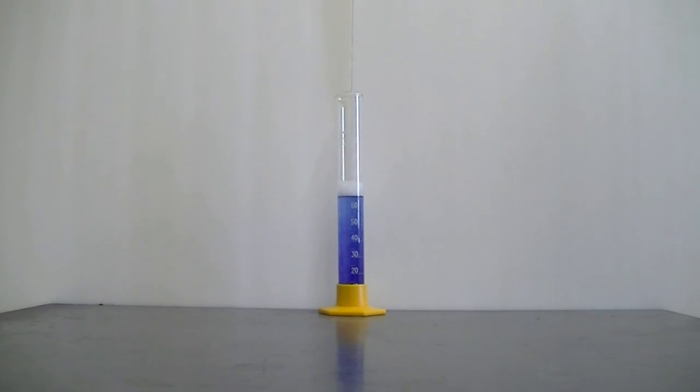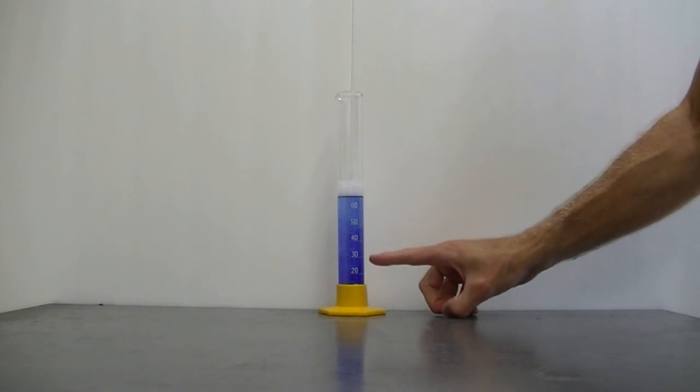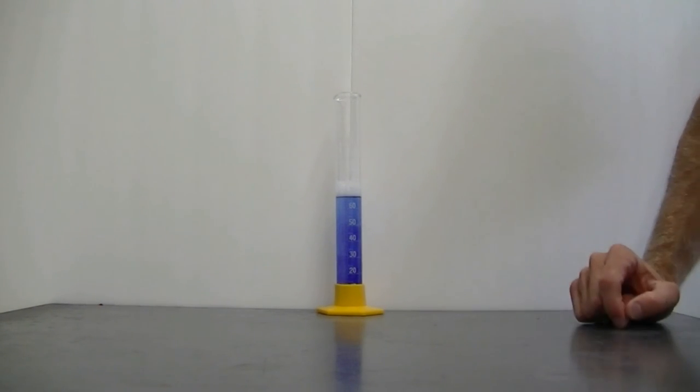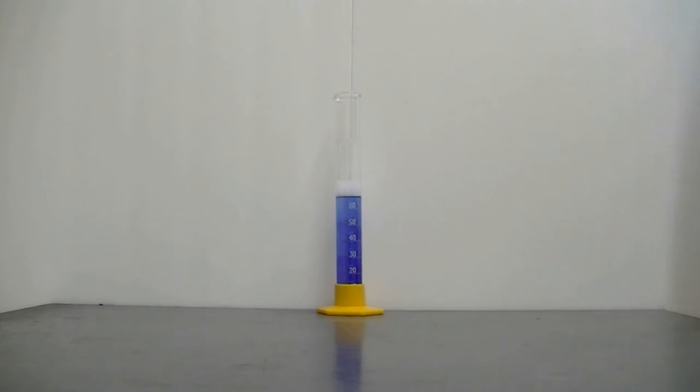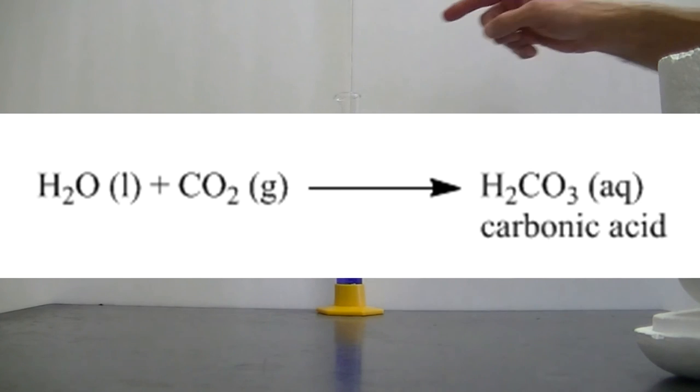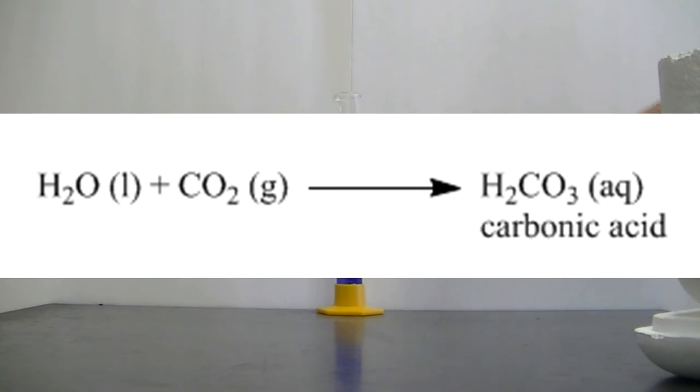Now the last question we might have is why is it that the carbon dioxide, when it mixes with this acid-base indicator thymolphthalein, why does it drive that blue to white or that blue to colorless color change? Well, when carbon dioxide dissolves in water, it forms carbonic acid. And there you have it. If I put carbon dioxide into this solution, carbonic acid will form and that carbonic acid will lower the pH, driving the color change from blue to colorless.